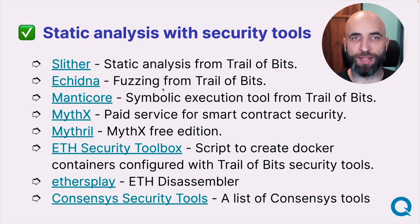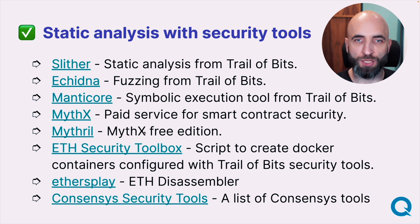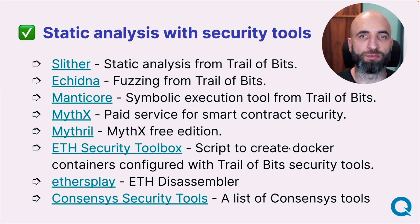There is a whole set of security tools that you must know and be able to use — the same tools that smart contract audit companies use as a first step. You have tools for static analysis, fuzzing, and symbolic execution, both paid services and free editions, even Docker containers configured with all the Trail of Bits security tools. These tools can do 80% of the hard work for you, so you can focus on the rest.